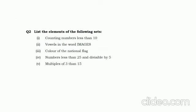Question number 2: list the elements of the following sets. (1) Counting numbers less than 10 — you have to write all numbers less than 10: 1, 2, 3, 4, 5, 6, 7, 8, 9. (2) Vowels in the word 'image' — the vowels are I, A, E.